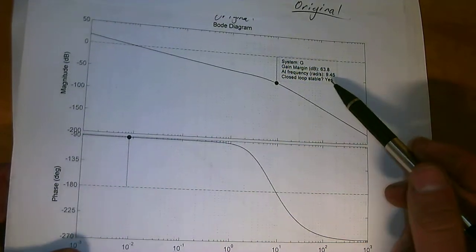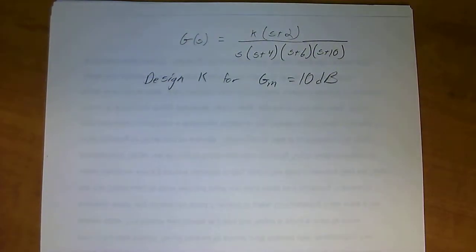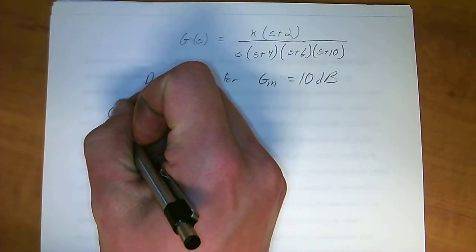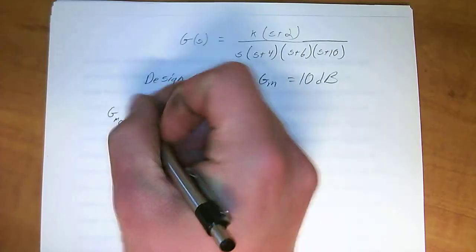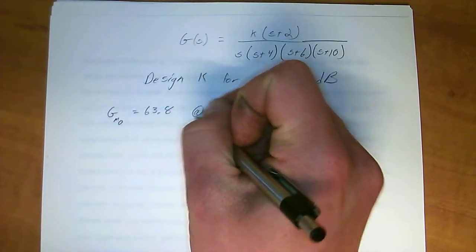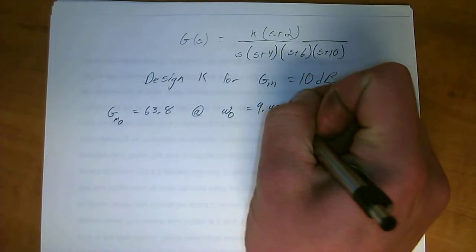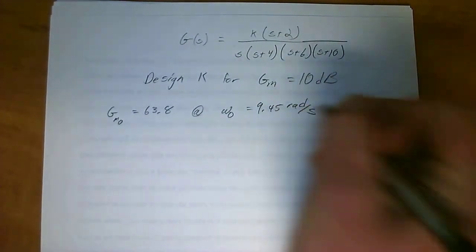So you want a gain margin of 10 from the problem statement. This is actually a really easy problem because we originally had a gain margin, which we'll call gain margin original. We have it as 63.8 dB at omega naught, at a frequency equal to 9.45 radians per second.